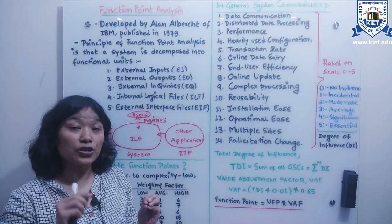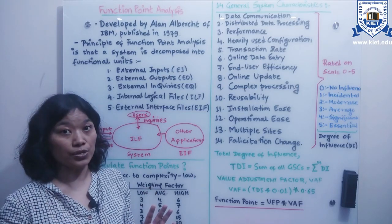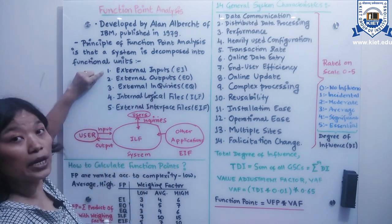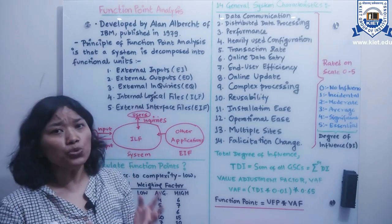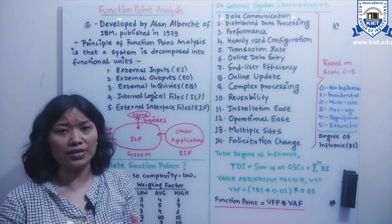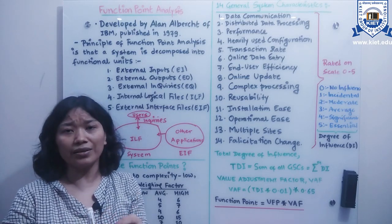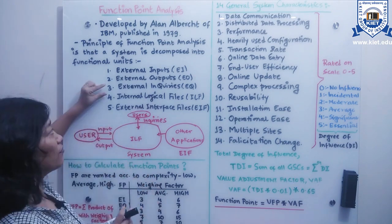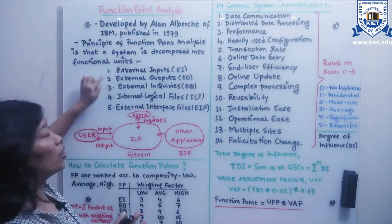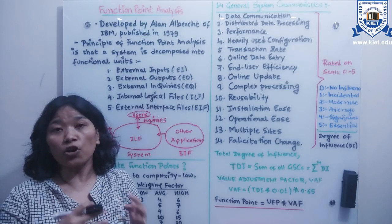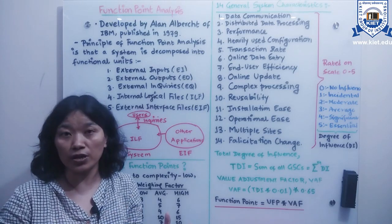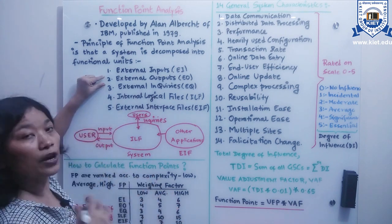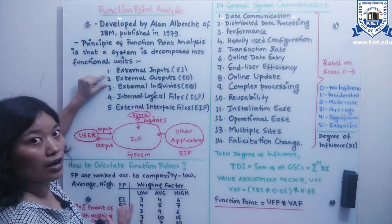Multiple users generally use software systems. Users who actually input data to the application — such kind of functionality is defined as external inputs. Some users may only be querying with display results shown — such functionality is defined as external inquiries. When there is complex processing and results are fetched from that processing, such functionality is defined as external outputs.